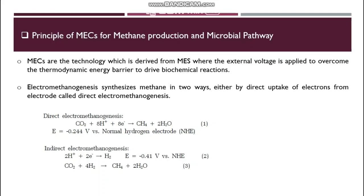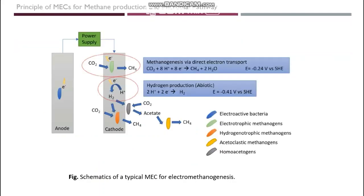In this system, electromethanogenesis synthesizes methane in two ways: either by direct uptake of electrons from the electrode, called direct electromethanogenesis, or indirect electromethanogenesis. This figure represents the schematics of a typical microbial electrolysis cell for electromethanogenesis. In the anode, an oxidation reaction takes place which provides electrons for reduction of carbon dioxide in the bio-cathode region. The bio-cathode is the important component where methane is produced by microorganisms using electrons supplied from the oxidation reaction. A separator or ion exchange membrane is necessary for migration of positively charged ions such as sodium, potassium, or hydrogen ions from the anodic chamber to the cathodic chamber to keep the solution electroneutral.